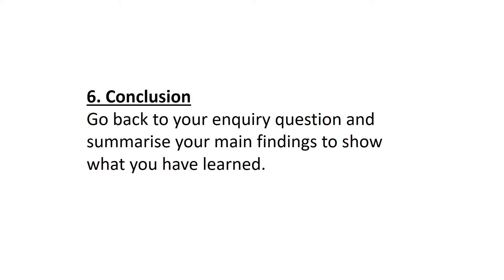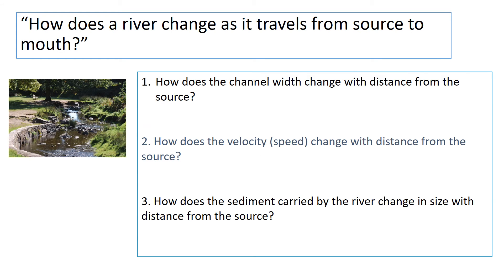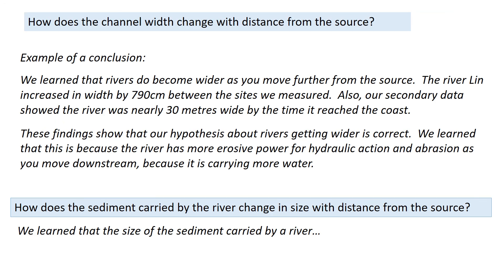The conclusion is where we go back to our original inquiry question and use our analysis and findings to show what we've learned. Our three questions were: how does the channel width change, how does the velocity change, and how does the sediment size change? Overall that helps answer how a river changes from source to mouth. We learned that rivers do become wider as you move from the source — the River Lynn increased in width by 790 centimeters between measured sites, and secondary data showed it was nearly 30 meters wide by the coast. Our hypothesis about rivers getting wider was correct, due to greater erosive power from hydraulic action and abrasion as the river carries more water downstream.